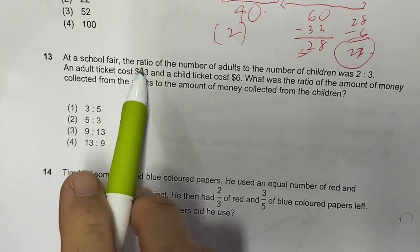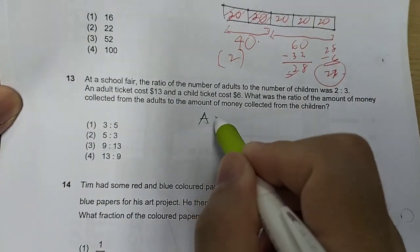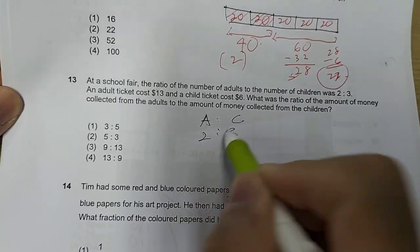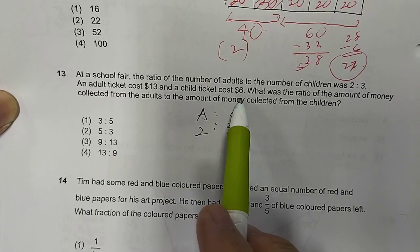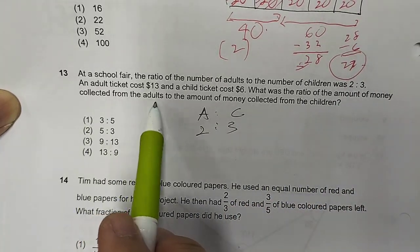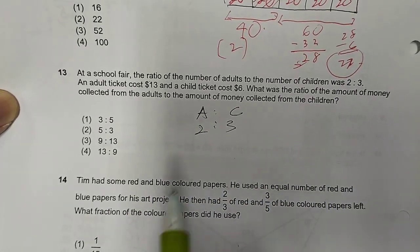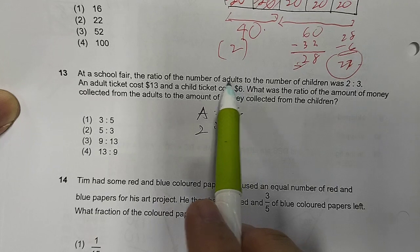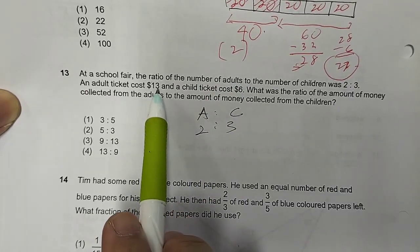At a school fair, the ratio of the number of adults to the number of children was 2 is to 3. So, adult to children is 2 is to 3. An adult ticket cost $13, and a child ticket cost $6. What was the ratio of the amount of money collected from the adults to the amount of money collected from the children? This is number of adults. This is the cost of the adult tickets.